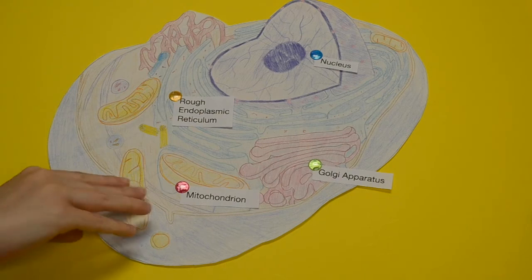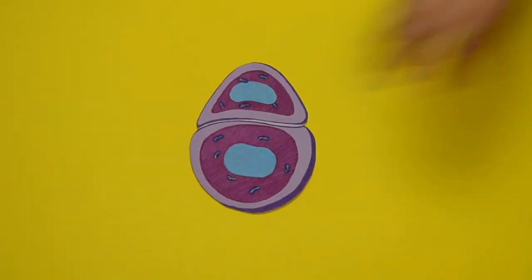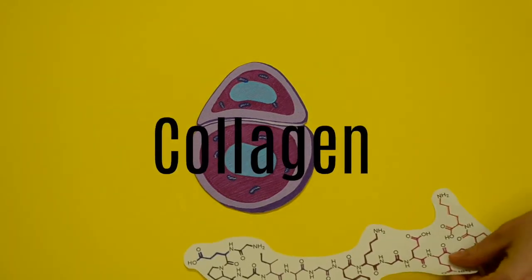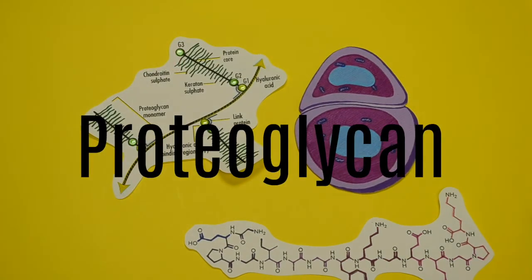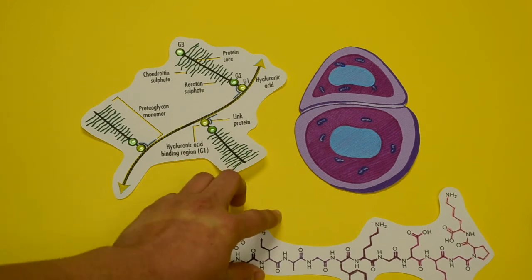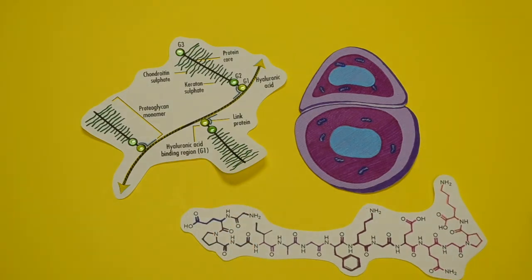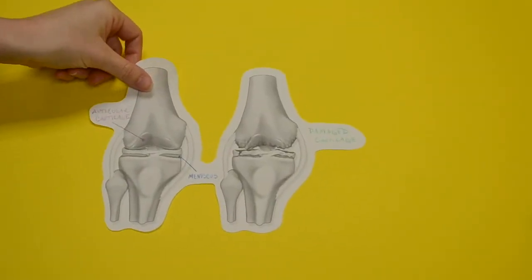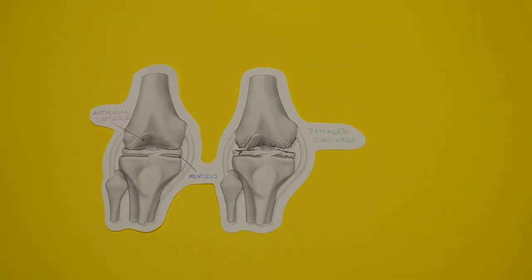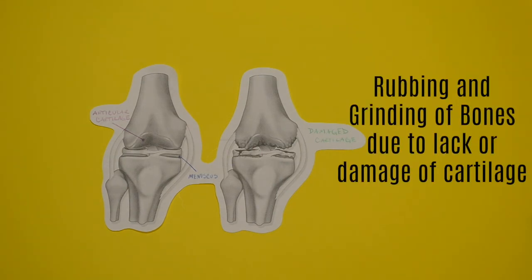The main function of the chondrocyte cell is to maintain the extracellular matrix. The chondrocyte does this by producing collagen and proteoglycan to maintain the mechanical integrity of its cartilage. If there were no chondrocytes, any damage done to the cartilage would be permanent and deterioration to the cartilage tissue would happen at an accelerated rate. This, in turn, would lead to conditions such as osteoarthritis, where bones rub or grind against each other due to lack or damage of cartilage.